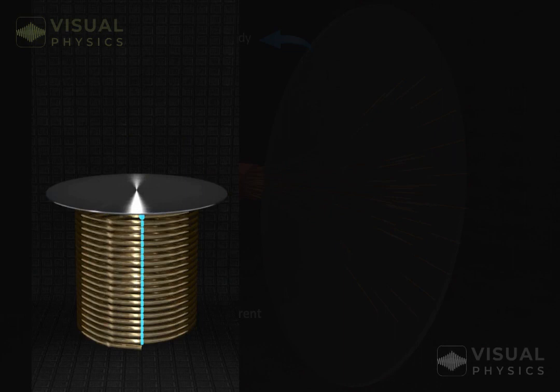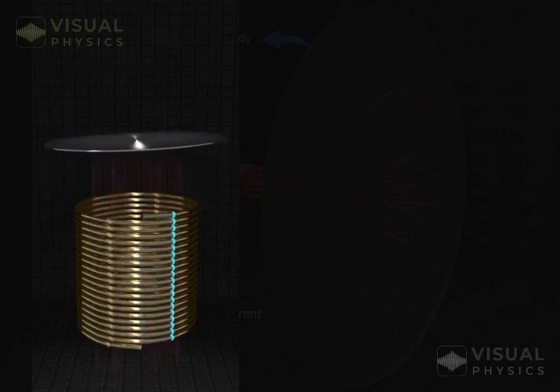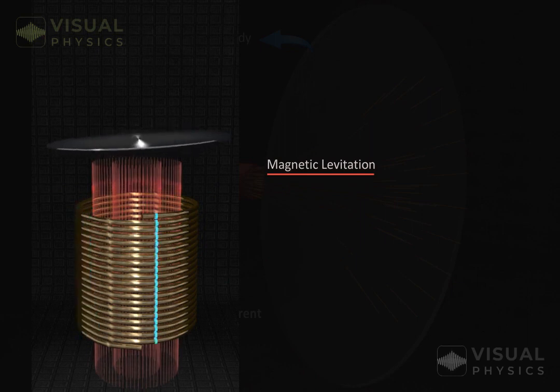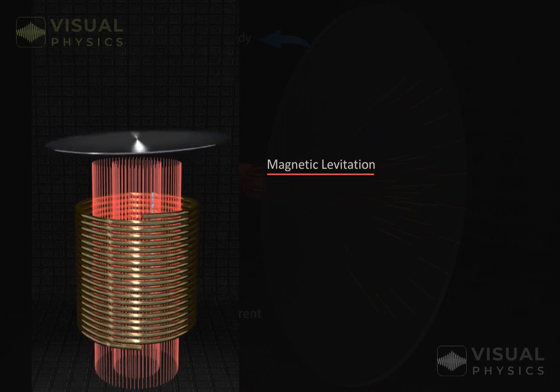This is often used to achieve magnetic levitation. This happens because the magnetic field produced by the eddy current in the disc repels the magnetic field of the source.